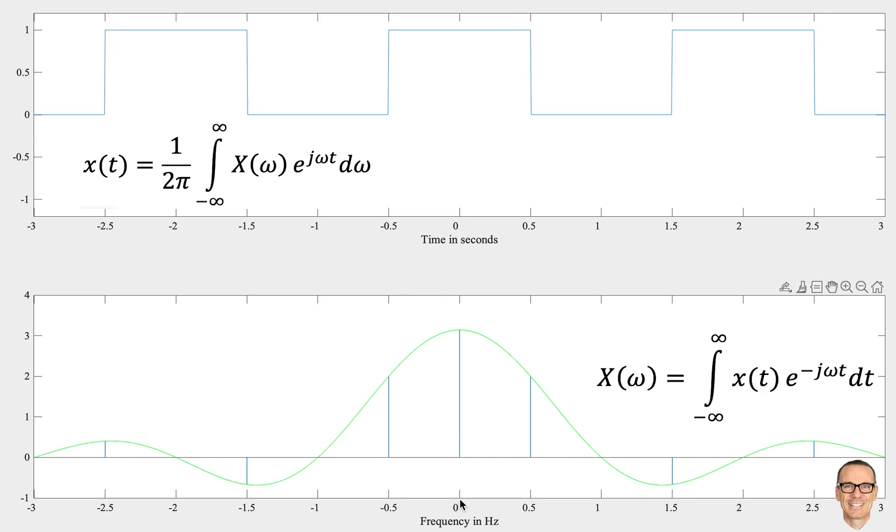For example, at 0 frequency, which is a constant offset, there's a component because the time domain waveform is offset from an average of 0. It's actually averaged around 0.5. Then there's a component at frequency of 0.5, a component which is negative at 1.5, and a component at 2.5, and so on off the graph.